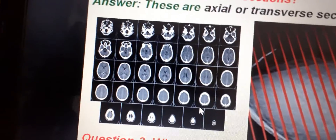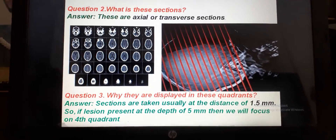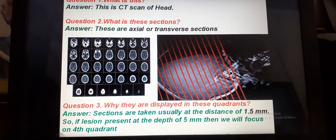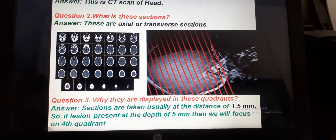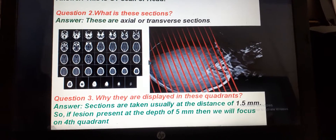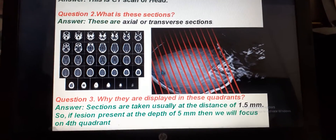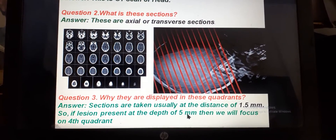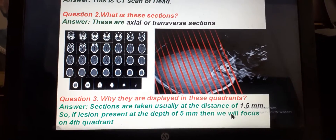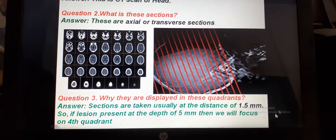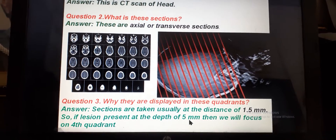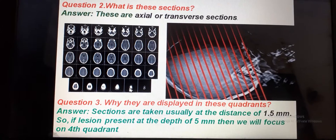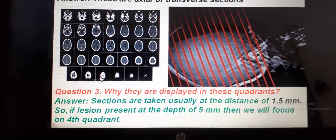Another question will be why sections are displayed in these quadrants. Sections are taken usually at a distance of 1.5 mm. The patient is lying in recumbent position and sections are taken from above downward. If a lesion is present at a depth of 5 mm, we focus on the fourth quadrant, because 1.5 plus 1.5 plus 1.5 gives approximately 4.5 mm, so the fourth section shows the lesion. Quadrants are numbered 1st, 2nd, 3rd, and 4th.